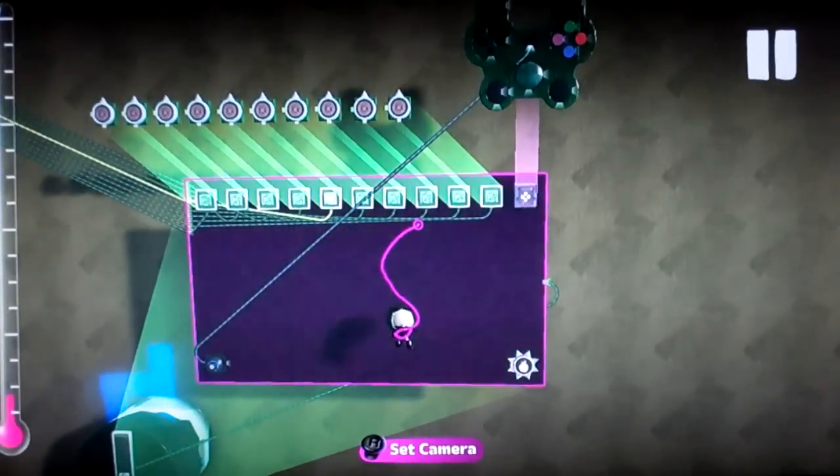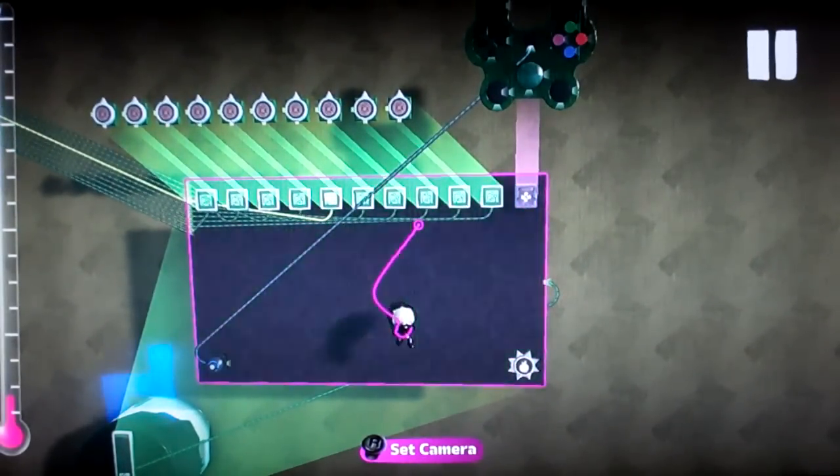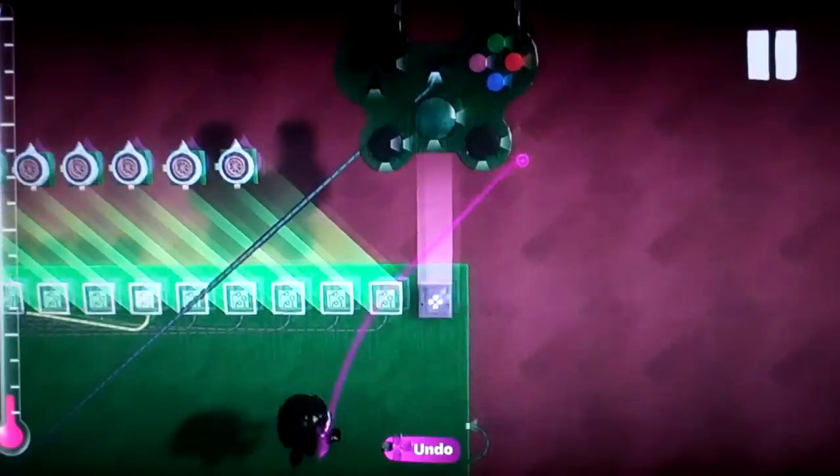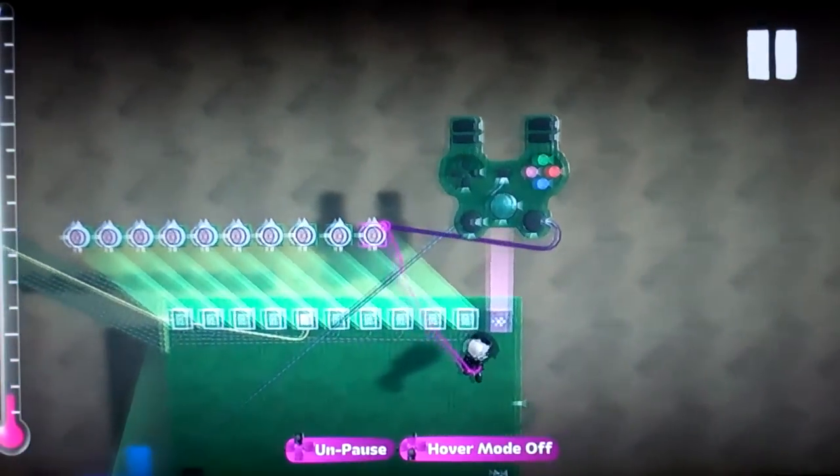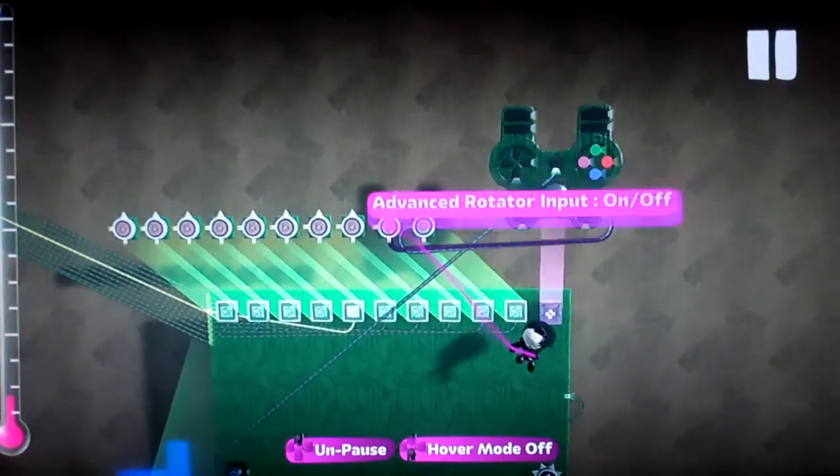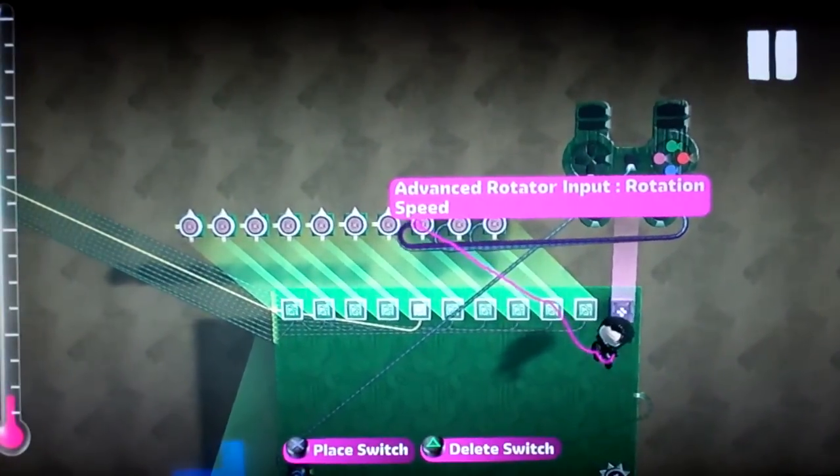Then what you want to do is you want to get what you're going to use to turn. In this case it's going to be left and right on the controlinator stick, so just hook that up to rotation speed on all of them.